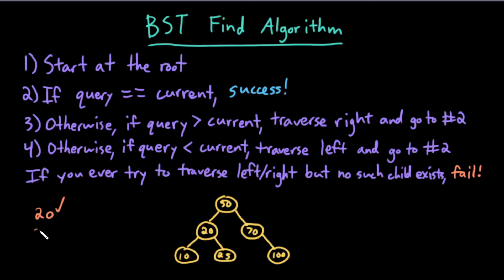Let's try looking for 25. I start at the root. 25 is not equal to 50, so I don't succeed yet. 25 is less than 50, so I should traverse left and start over. Is 25 equal to 20? No, it's not. 25 is greater than 20, so I should traverse right and repeat. Is 25 equal to 25? Yes, it is. Therefore, I've succeeded.